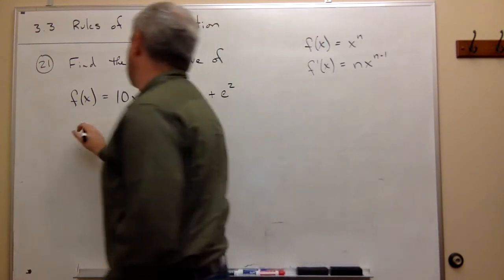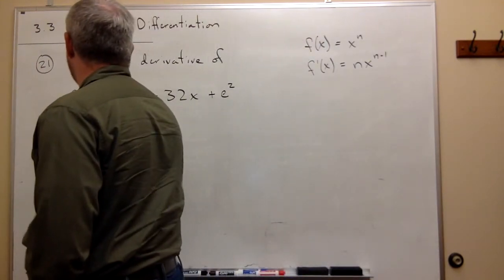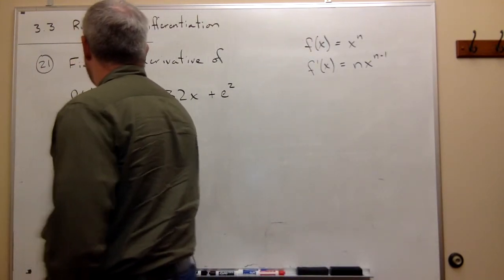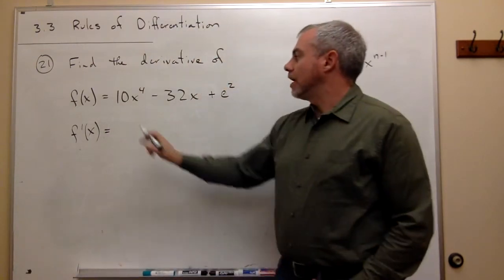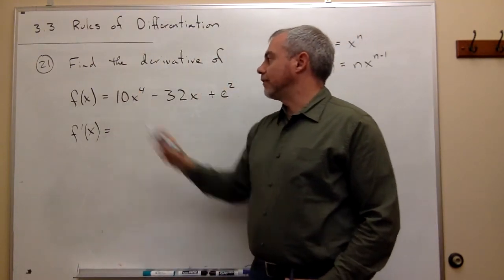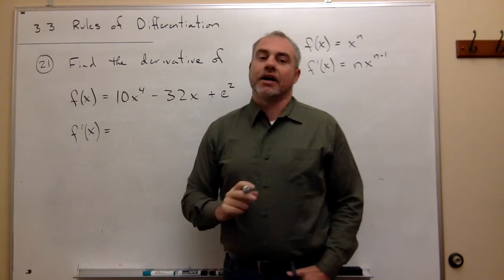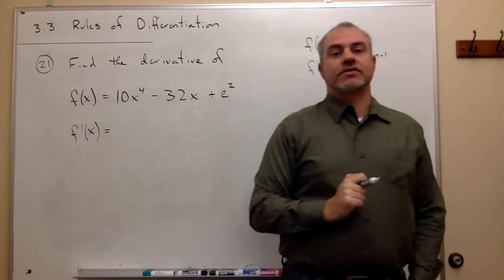So I want to take the derivative f prime of x, and that equals the derivative of 10x to the fourth, first of all. And what is the derivative of 10x to the fourth?